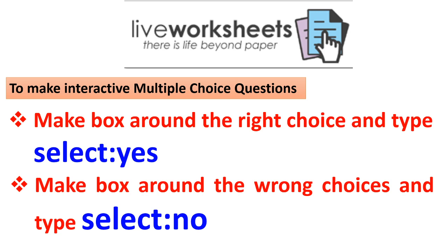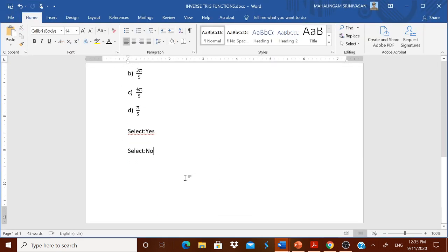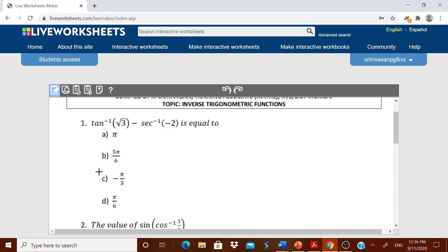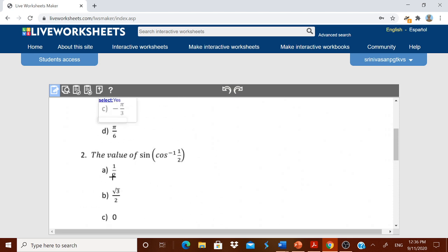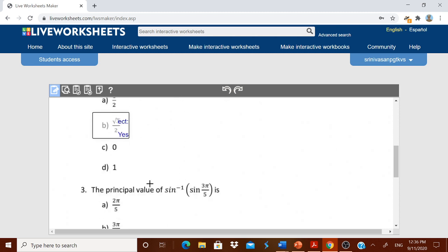This may take some time, so what you can do is type 'select:yes' and 'select:no' in a Word document, copy them, and then paste wherever needed. For example, I have typed 'select:yes', copied it, and I am coming back to the worksheet. For the first question, minus five by three is the correct answer — I am making a box around it and pasting 'select:yes'. For the second question, root three by two is the correct answer — I am making a box and pressing Ctrl+V to paste 'select:yes'. For the third question, the answer is two pi by five — I am making a box and pasting 'select:yes'.